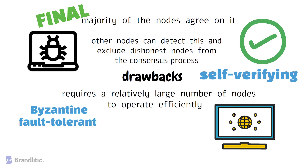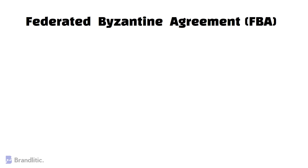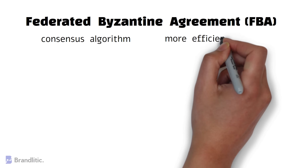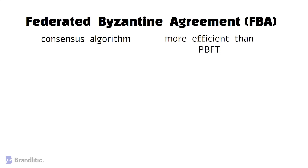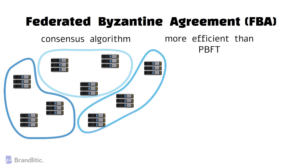Another solution to the Byzantine generals problem is Federated Byzantine Agreement, or FBA. FBA is a consensus algorithm used in blockchain technology and is designed to be more efficient than PBFT. In FBA, nodes are grouped into federations and each federation has its own consensus algorithm. Nodes vote for other nodes to become validators in the federation, and once a sufficient number of votes have been cast, the validator is added to the federation.